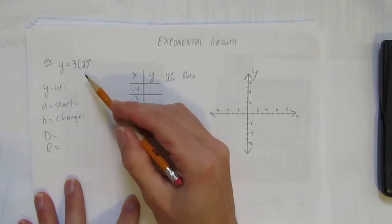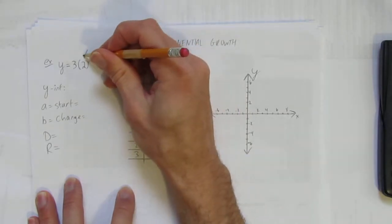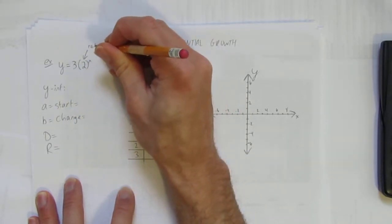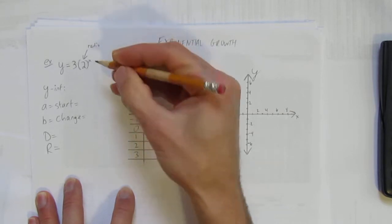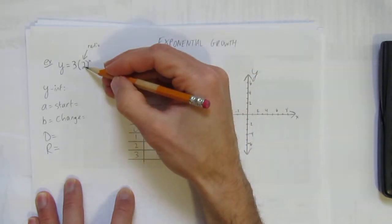You know it's exponential growth because the base here, or the change, or the ratio—you can call it any one of those—that base change ratio is greater than 1. In this case it's 2. That means it's growth. Growth is always a ratio greater than 1.